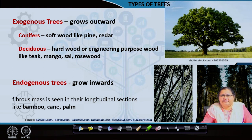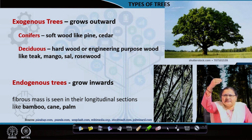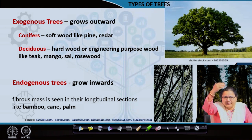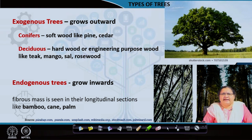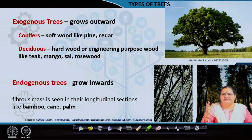Coming to the endogenous trees - they grow inward, and a fibrous mass is seen in their longitudinal section. If you cut a bamboo slit, you can see the fibers in the longer face. The exogenous grows outward; the deciduous grows much larger than the conifers, so you can get a longer layer of wood in the deciduous variety.